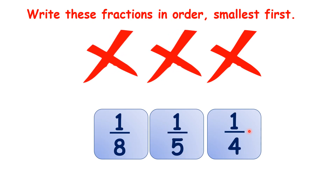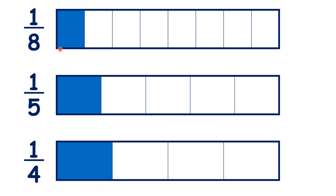Now it seems strange that fractions with larger denominators are smaller, so let's look at one-eighth, one-fifth, and one-quarter, so that we can see how small or large they are. You can clearly see here that one-eighth is the smallest. That's because if our rectangle has been divided into eight pieces and we only have one piece, then the piece shaded in blue here is small. Then we have one-fifth in the middle, and one-quarter is our largest fraction.